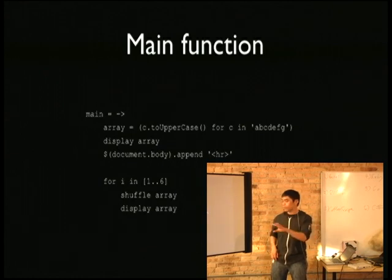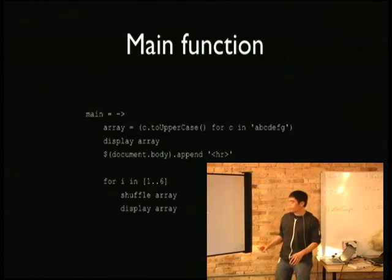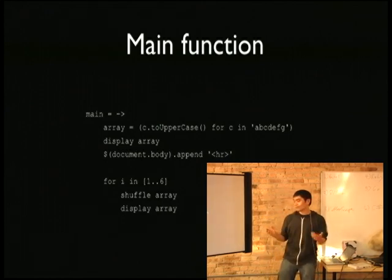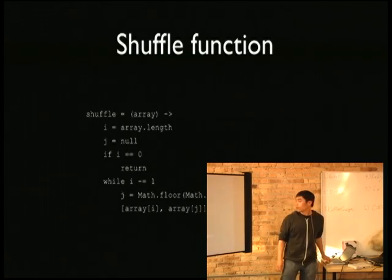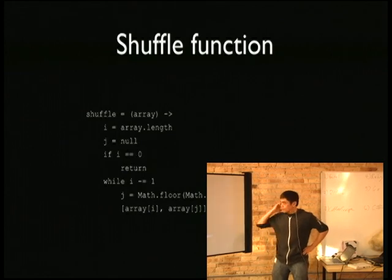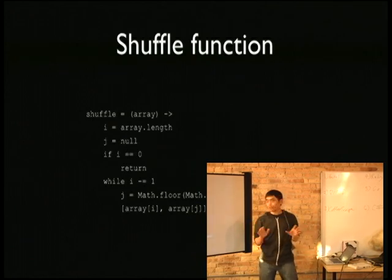The thing that tripped me up as I was writing this program is there's no colon. For your looping statements you don't need a colon, and I was constantly running into that because I just automatically put a colon in every for loop I make. And then here is the shuffle function — it's pretty basic.